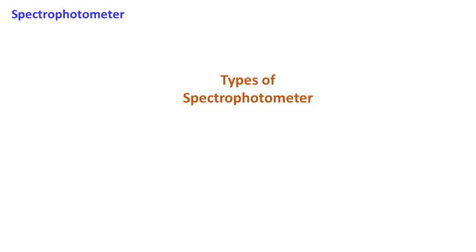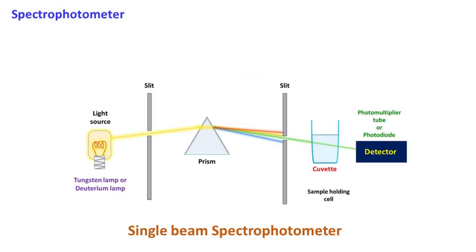Spectrophotometers can be of two types: single-beam spectrophotometer and double-beam spectrophotometer. The spectrophotometer that we have discussed so far is a single-beam spectrophotometer.